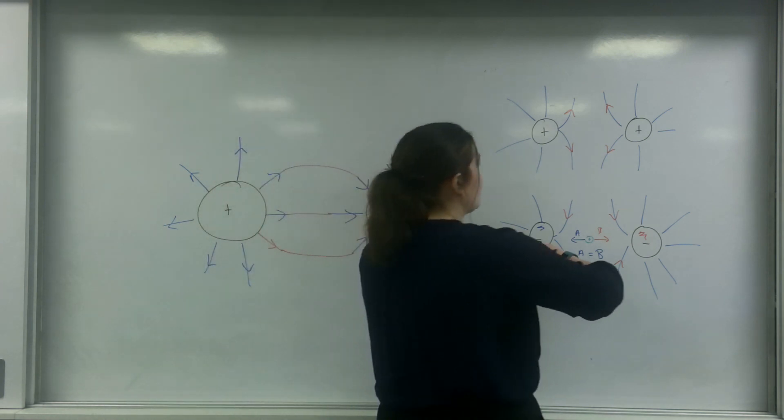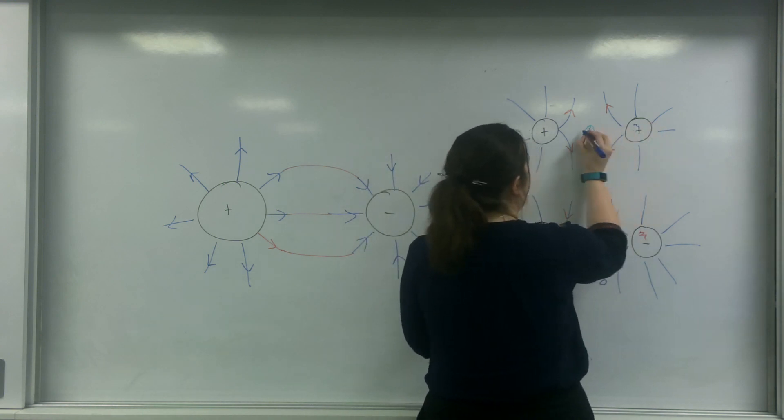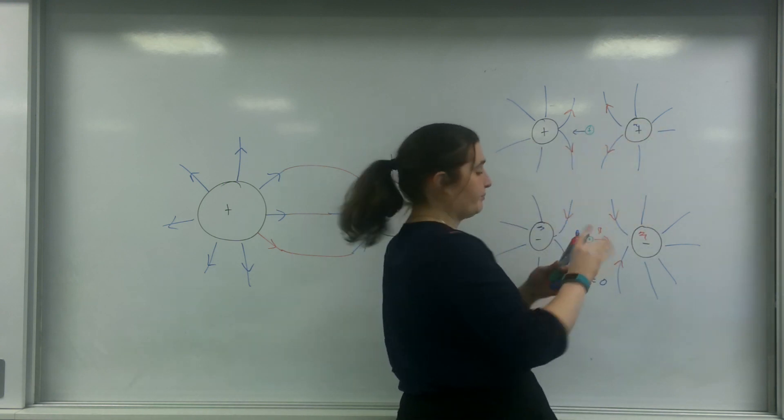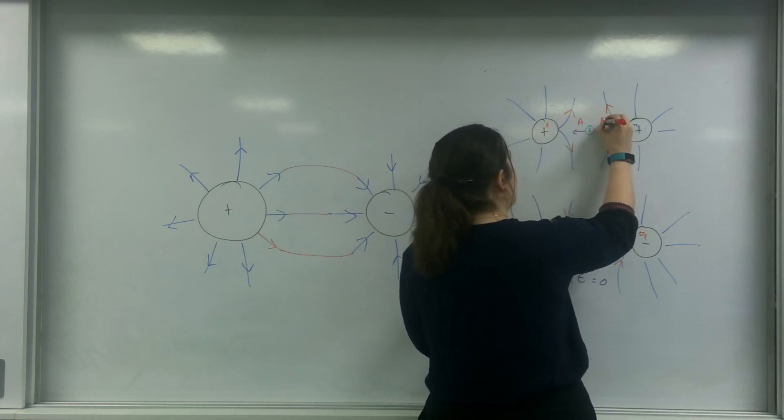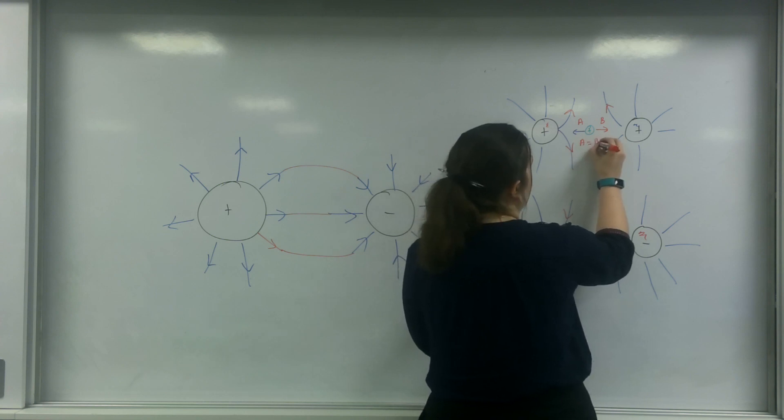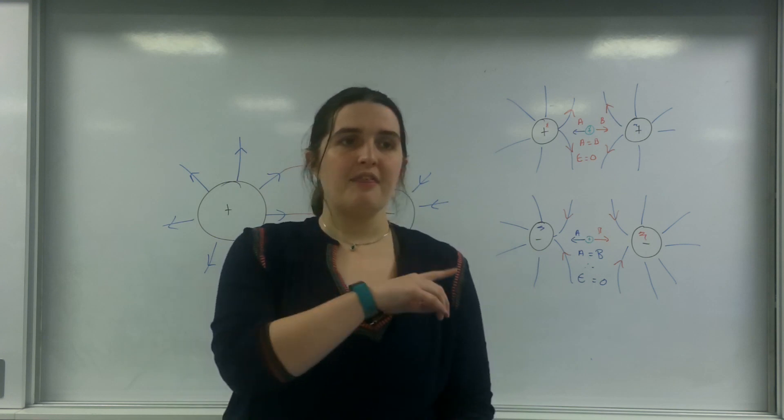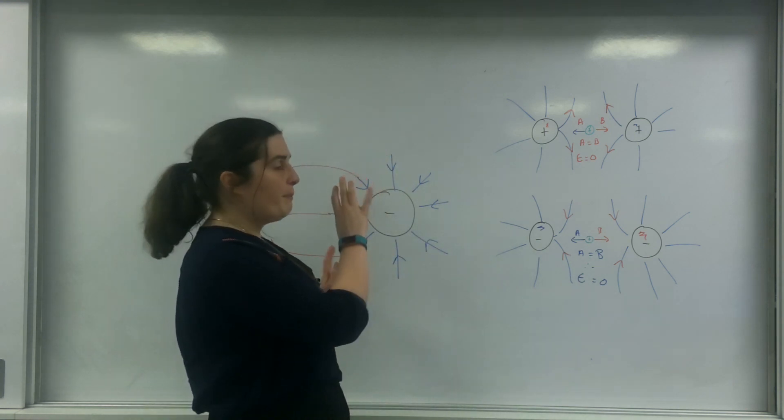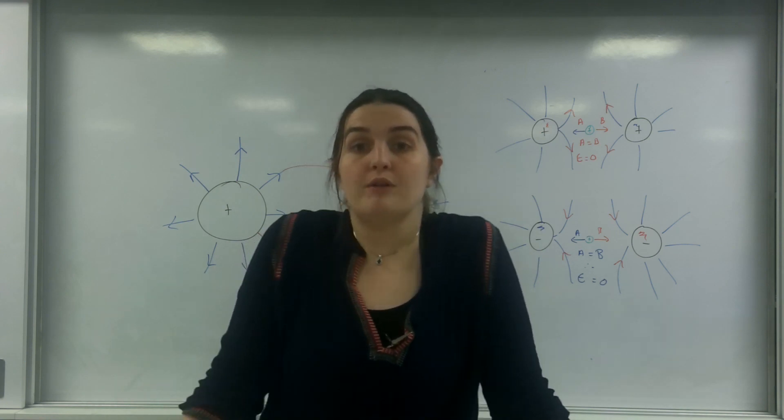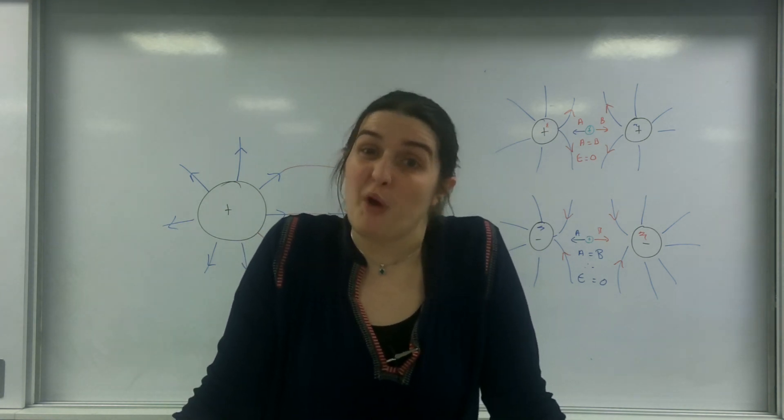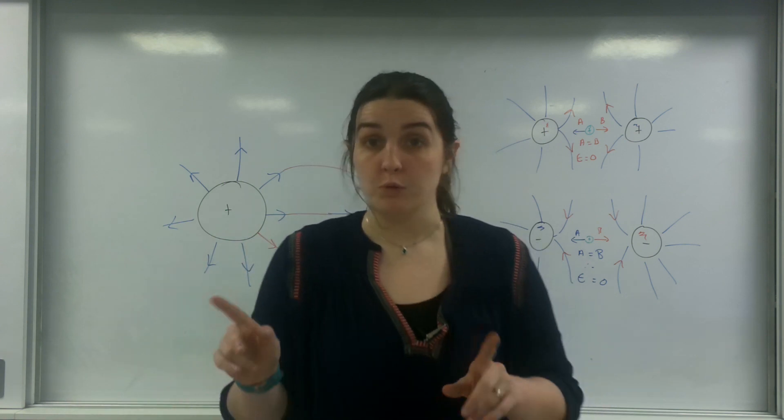Exactly the same happens here at the top. If I had a positive charge here, it would be repelled by that one and repelled by that one. And again, I have A and B, and A would equal B. So the field strength equals zero. So that there is the basics of this. Now what I'm going to do now is to take it a little bit further. I have assumed in all of these cases that the charges were the same. What would happen if I had unequal charges?